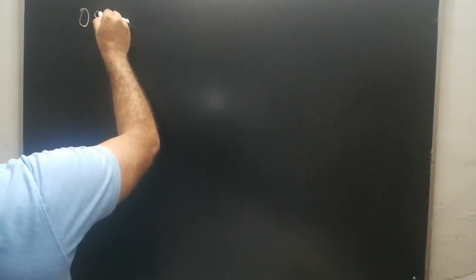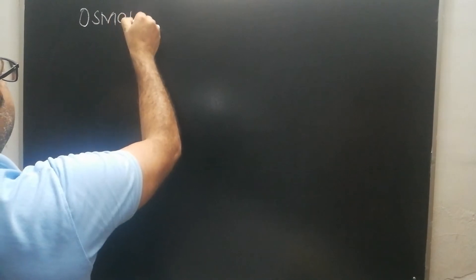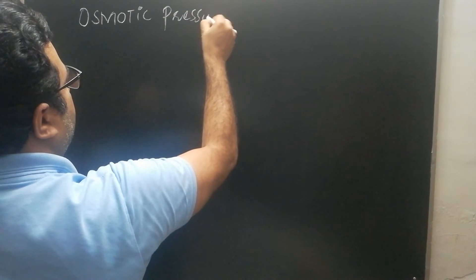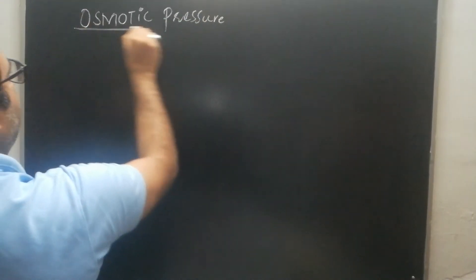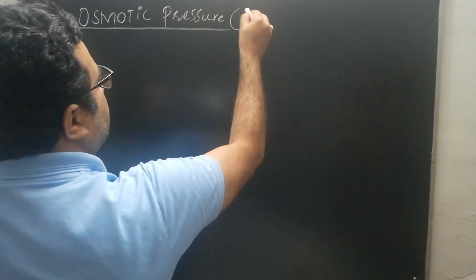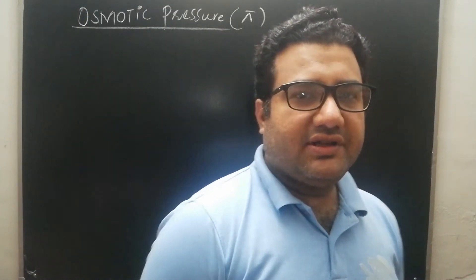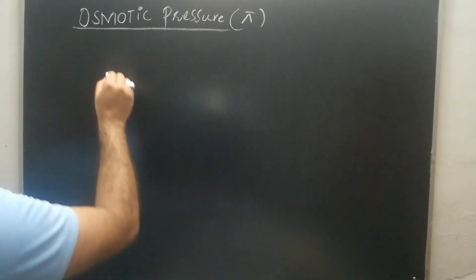Bismillahirrahmanirrahim. Welcome all the students to another video lecture of Abdullah Sunawla Tutorials. In this video lecture we are going to discuss the colligative property which is osmotic pressure, shown with the symbol pi.